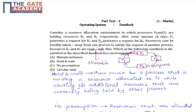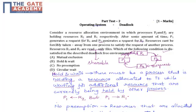First, we have to know what is meant by hold and wait. It is nothing but there must be a process that is holding a resource and it is waiting for an additional resource which is currently being held by another process. From this diagram, process P1 is holding R2 but it is requesting for R1 — that is nothing but hold and wait.